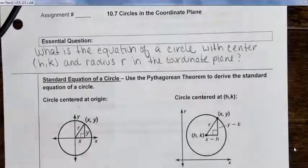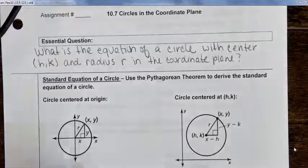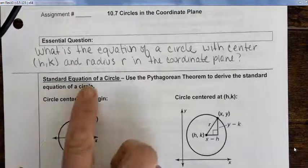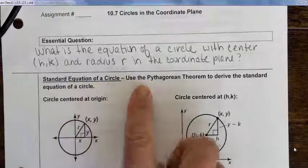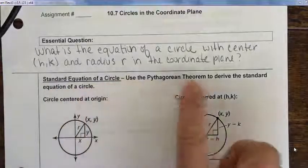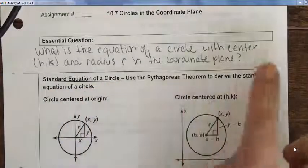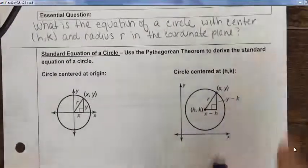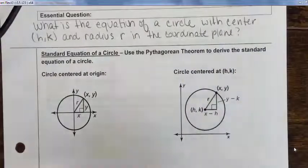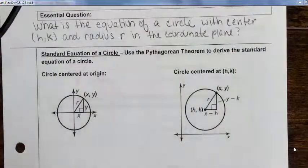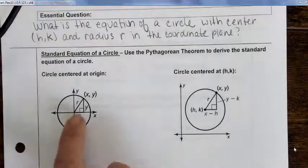We're going to do a little deriving of the equation of a circle. For the standard equation of a circle, we're going to use the Pythagorean Theorem to derive it. There's really just one way of looking at the standard equation, but I've given us a simple example to help with this.